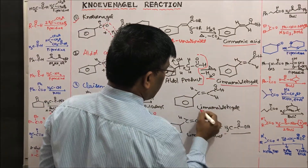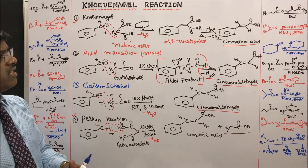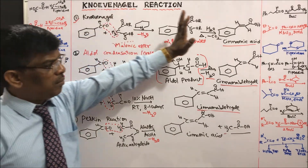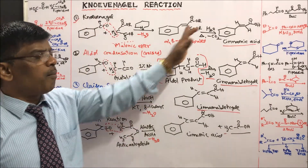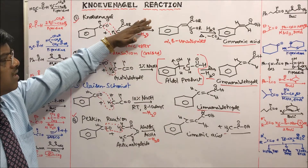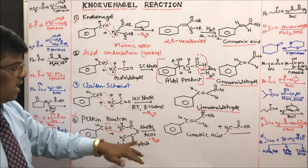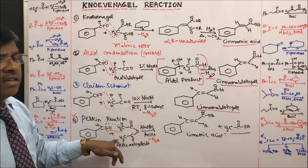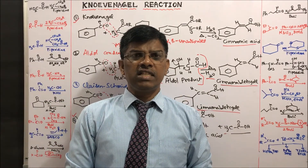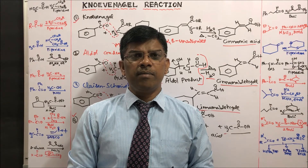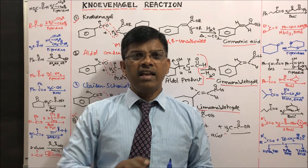Cinnamic acid can be prepared using the Knoevenagel reaction or the Perkin reaction. Cinnamaldehyde can be prepared using the Aldol condensation or the Claisen-Schmidt reaction. These four reactions are mechanistically similar and give identical or very similar products. The differences lie in the base used — dilute versus strong — and the active methylene component. Thank you for watching. Please subscribe to Venus Academy, like, and click the bell button.